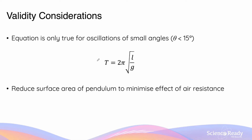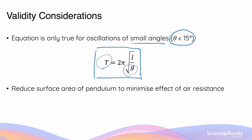In this simple pendulum experiment, there are several validity points to consider. First, we're relying on an accepted relationship between the period of oscillation and gravity to calculate g, so we assume that equation is correct. This equation is only true for oscillations starting with a small angle — usually defined as less than 15 degrees. When the angle of oscillation exceeds this value, it doesn't obey the equation used for the experiment. So I need to ensure the starting angle is less than 15 degrees.